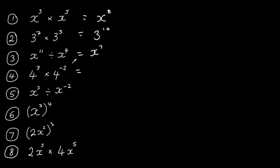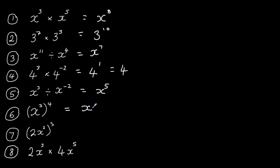When we multiply we add the powers: 3 plus minus 2 means 3 minus 2, which gives us the power of 1 — we don't write the power of 1, so that's just 4. Next, division means we subtract the powers: 3 minus minus 2 — minus minus means plus — so 3 plus 2 makes 5, giving x to the power of 5. Then x cubed to the power of 4: x cubed times x cubed times x cubed times x cubed makes x to the power of 12.